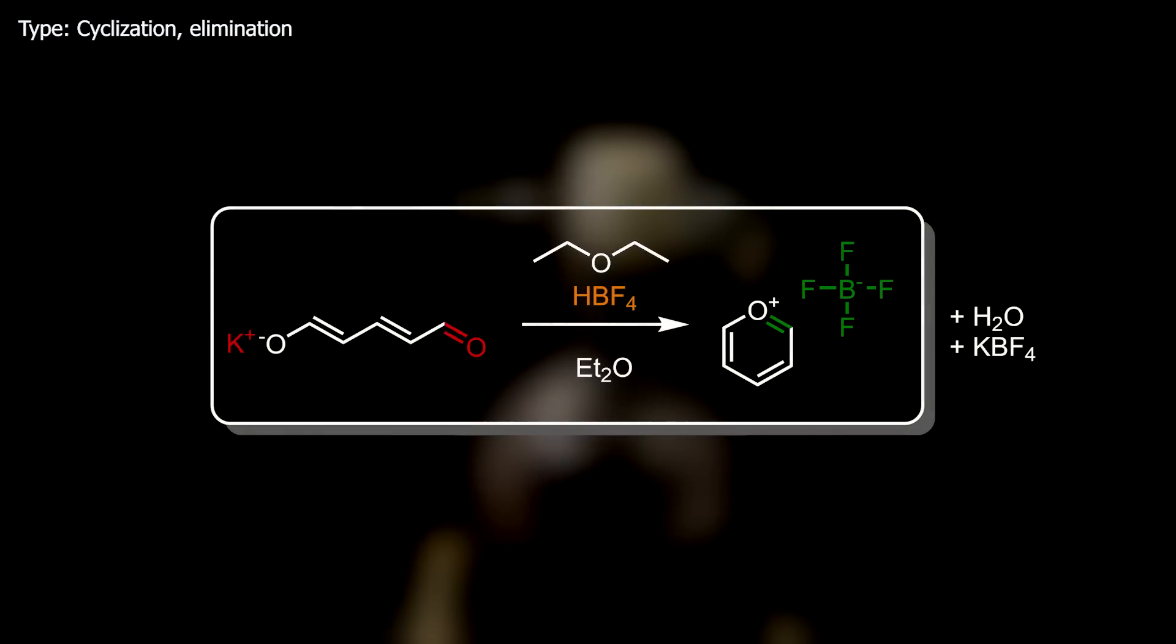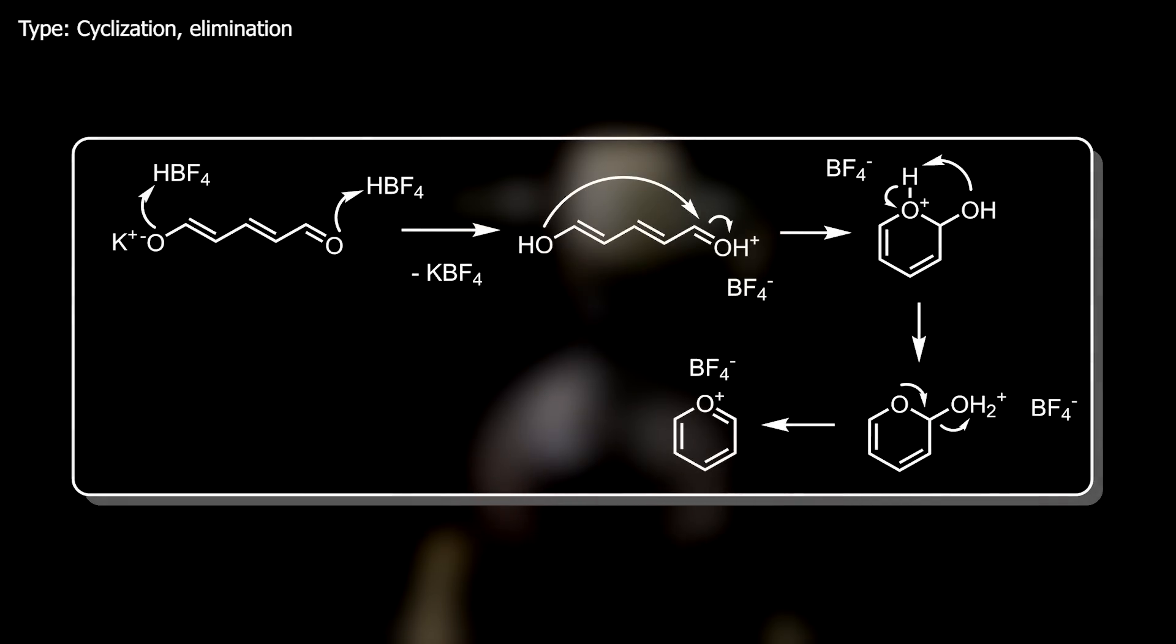In this reaction, the precursor reacts with two equivalents of tetrafluoroboric acid to cyclize, and then eliminate water, forming peryllium tetrafluoroborate. How it works is that in this excess of acid, both the aldehyde and the enolate are protonated by the acid at the same time.